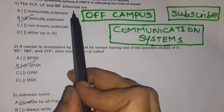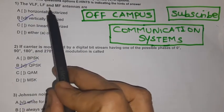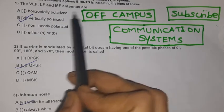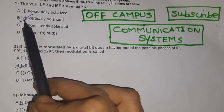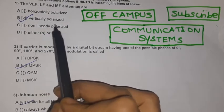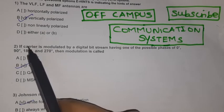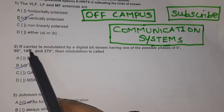Question 1: The VLF, LF, and MF antennas are vertically polarized.